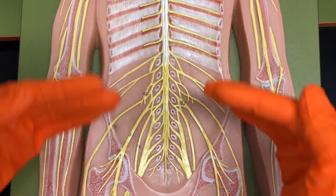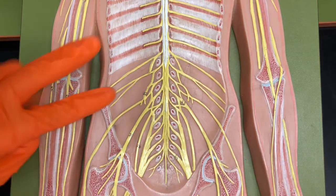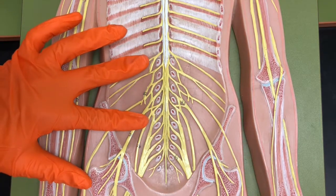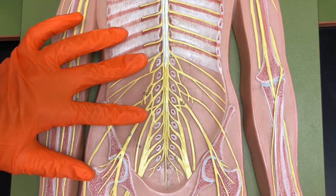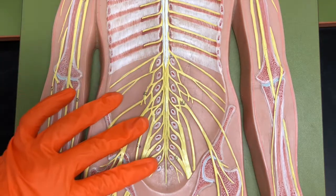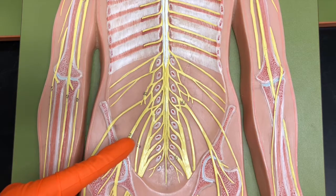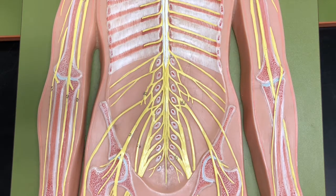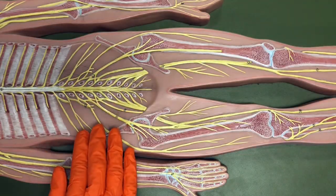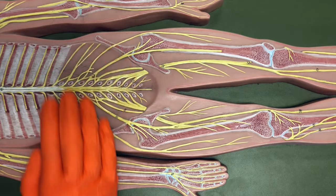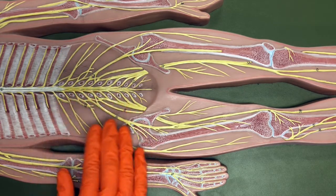As we move inferiorly, we have two more plexuses. In the areas of L1 to L4, we have the lumbar plexus. And then in the areas of L4 to S4, we have the sacral plexus. Remember that we have a plexus on the right side and the left side. So let's first look at the right side.